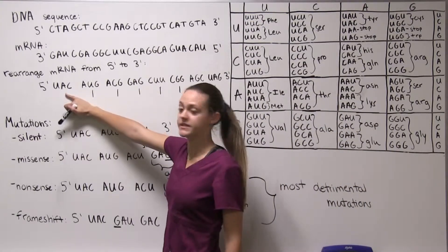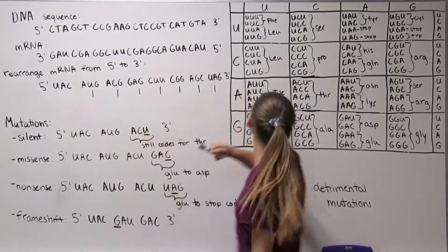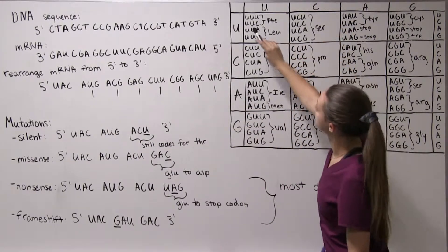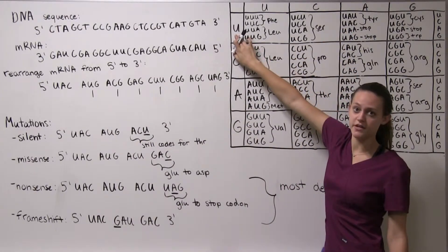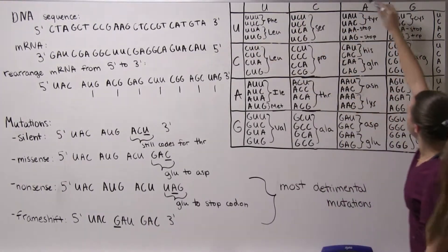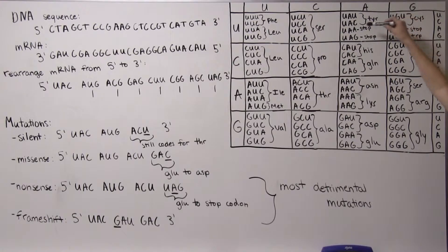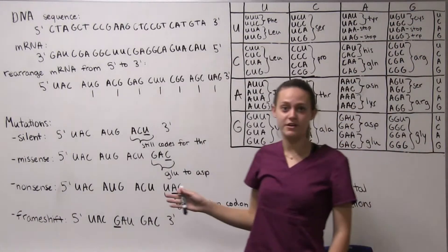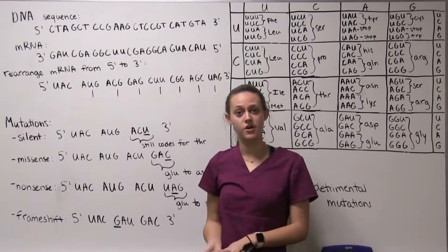So starting with UAC. UAC is going to code for, you start with your first letter here, your second letter here so we have U, A, and then third letter goes here. So UAC codes for tyrosine but that doesn't matter yet because we haven't reached a start codon.